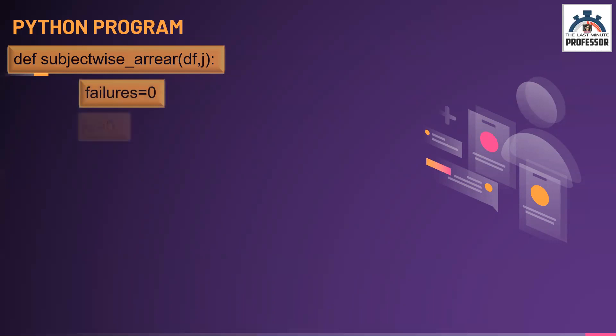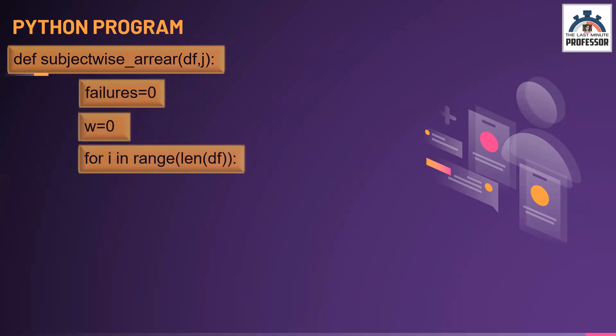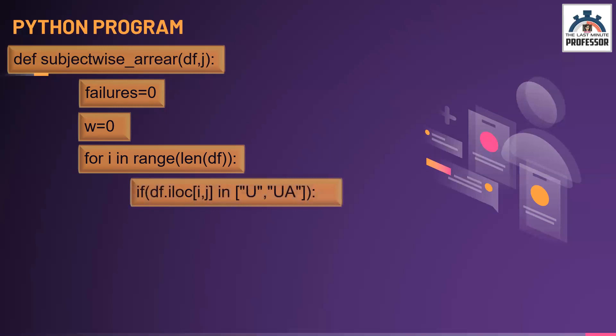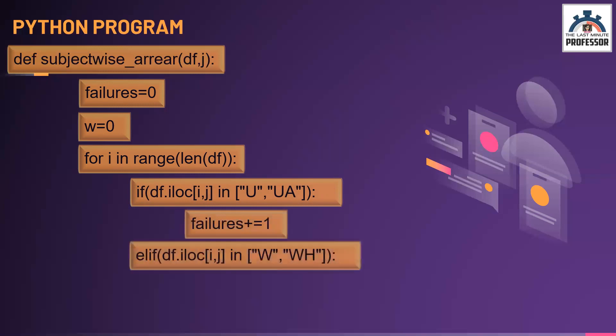Here I am initializing the variable 'failures' as 0 and W as 0. Now I am going through the entire list along the length of the data frame. If I find any grade that is U or UA for a particular subject — that's why df.iloc of i, J — I am incrementing the failure count by 1. Else, if I find the grade W or WH, I am incrementing W by 1. This is repeated throughout the length of the data frame, that is for all 100 entries.